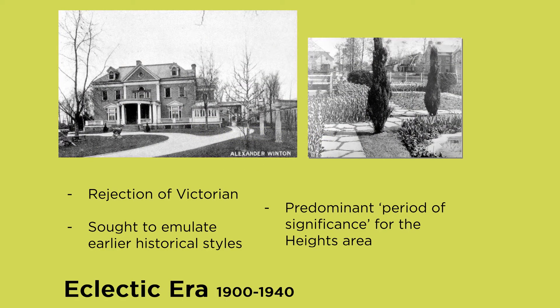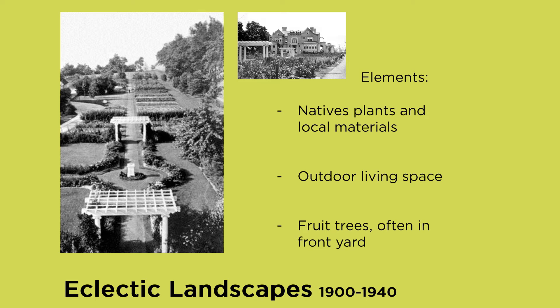Moving forward in time, we come to the eclectic era, roughly 1900 to the 1940s. This was a direct rejection of the Victorian. Within this period, they sought to emulate earlier historical styles. This is the predominant period of significance for the Heights area, so this is really where I spent a lot of time. As a rejection of the Victorian, we moved from having rare exotic foreign species back to having native plants and local materials. The outdoor was seen increasingly as an additional living space, and we see a certain return to utilitarianism with the incorporation of fruit trees and herbs.